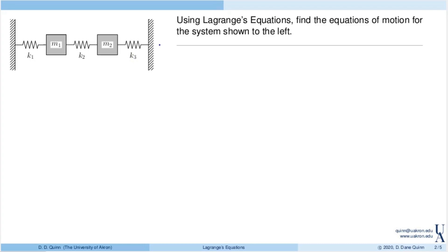The first thing we'll do is follow the procedure we've developed. We'll think about the system, identify the objects, determine what forces are conservative, what forces are constraint forces, and what forces are non-conservative. We will define coordinates and directions, then identify the kinetic energy, followed by the potential energy, and then the application of Lagrange's equations.